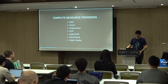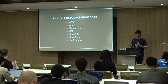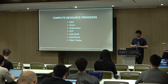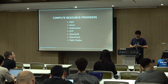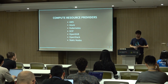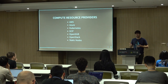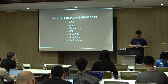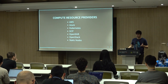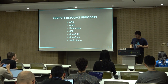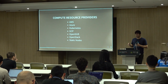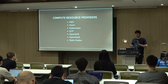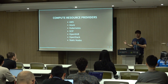Zuul also integrates with a whole bunch of different compute resource providers. To run CI jobs and tests, you need somewhere to execute them. Zuul will talk to cloud providers like Amazon, Azure, and Google Cloud, but also OpenStack, Kubernetes, OpenShift, or even just static nodes you've got in your data center or under your desk. The idea is to make it easy for you to get up and going without needing to change how you're already building and deploying your software.